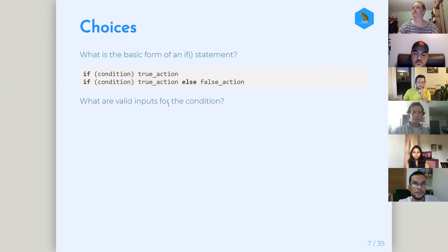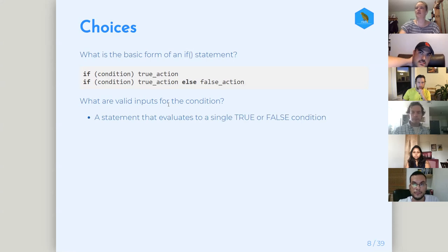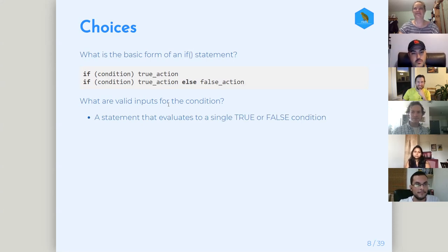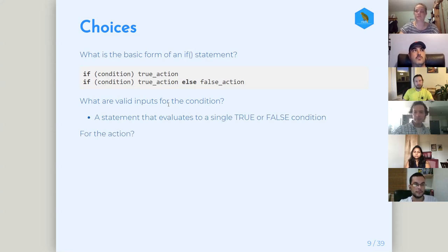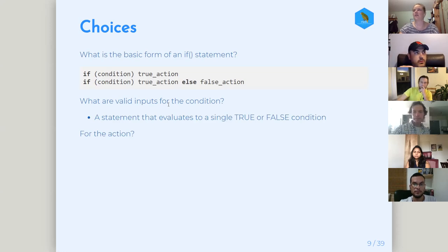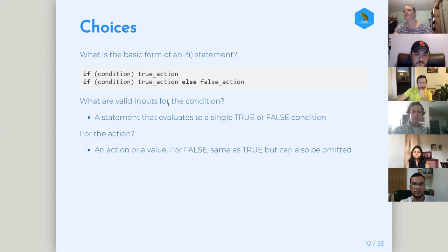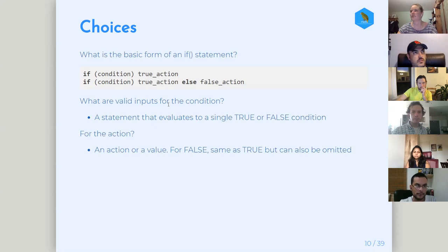The things we can put in there — those valid inputs need to result in a true or false, and just one evaluation for the if. So whatever the check is — if it's red, put it on your head — whatever the conditional check may be, it needs to evaluate to a single true or false. For the action, we can put in a value to have that returned, or we can perform an action that is going to return a value. You can put a function in there, or just a value outright and get that output. For false, you don't have to put anything in there — if the condition turns out to be false and there's no else, it'll just return an NA because it's unknown.